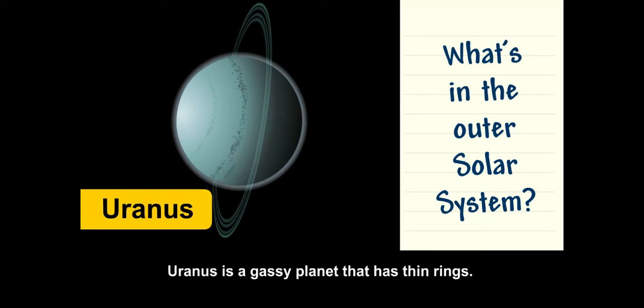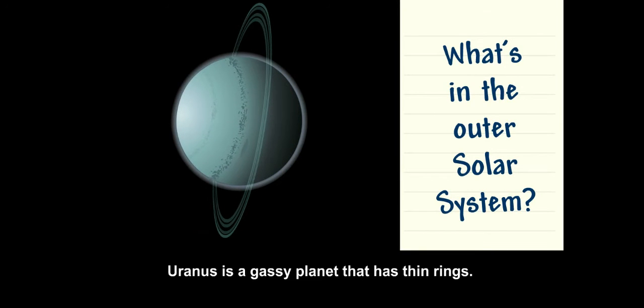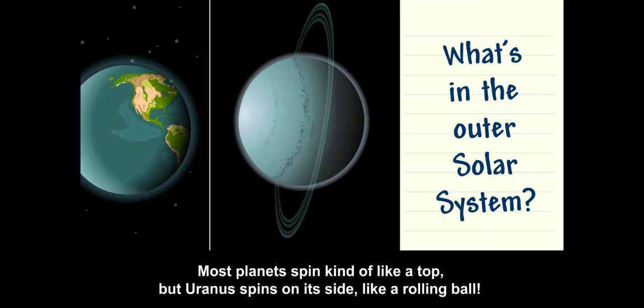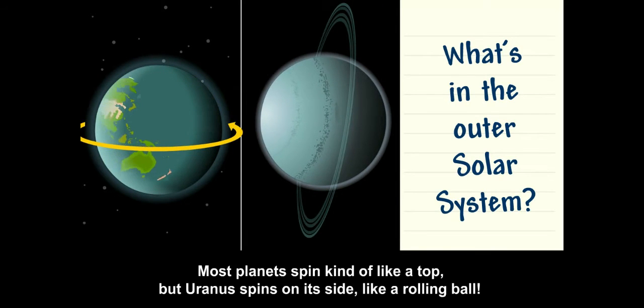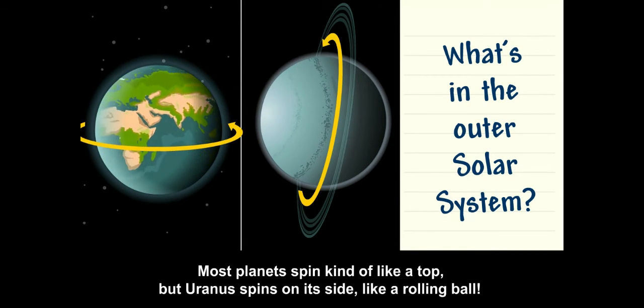Uranus is a gassy planet that has thin rings. Most planets spin kind of like a top, but Uranus spins on its side, like a rolling ball.